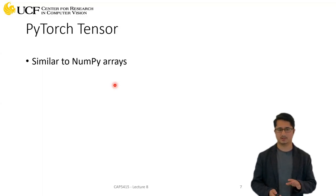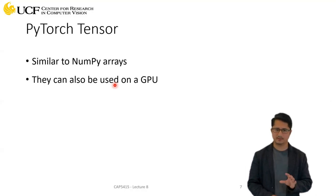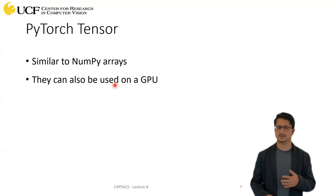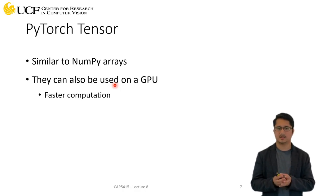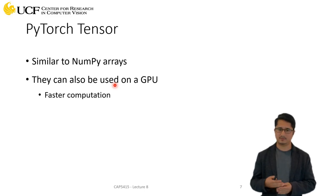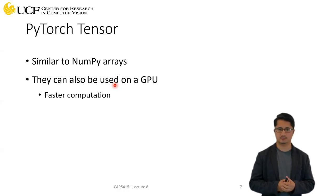In PyTorch we have tensors, which are the same as NumPy arrays. The only difference is these tensors can also be used on a GPU. We need GPU because we want faster computation — if you only use CPUs for training, it will take a lot of time.